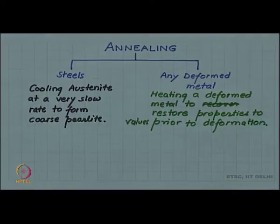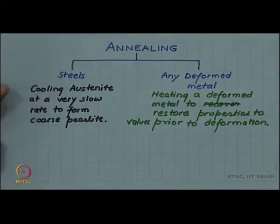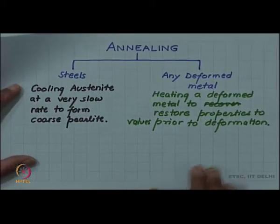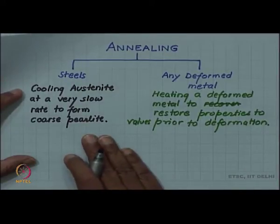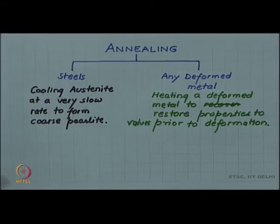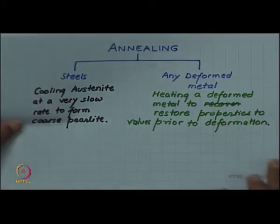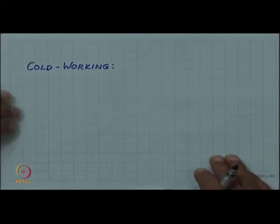One should distinguish between two different uses of the word annealing. In case of steels, it is cooling of austenite. In case of deformed metal, it can be any metal which is being deformed and is being heated to restore some of its properties. Let us see what is involved in this kind of annealing.